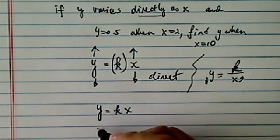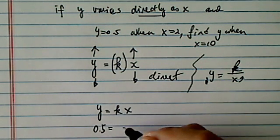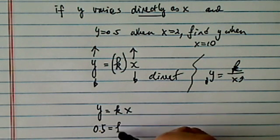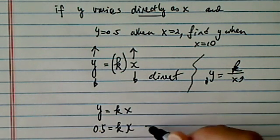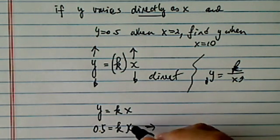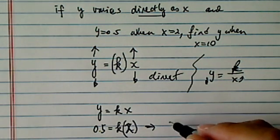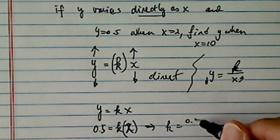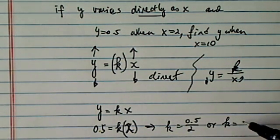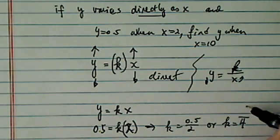And then they told you when y is 0.5, x is 2. So here we're going to solve. When x equals 2, y is 0.5. So k equals 0.5 divided by 2, or k equals 1 over 4.